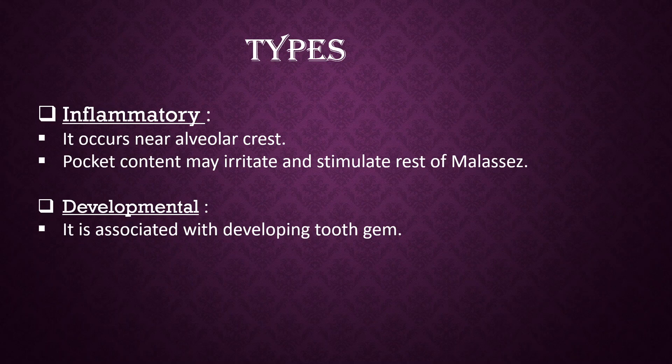Types of Lateral Periodontal Cysts: There are two types — inflammatory and developmental. Inflammatory type occurs near the alveolar crest; pocket content may irritate and stimulate rests of Malassez. Developmental type is associated with a developing tooth germ.